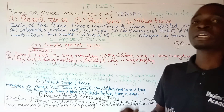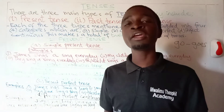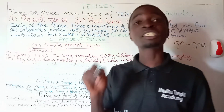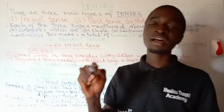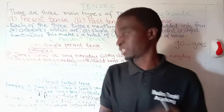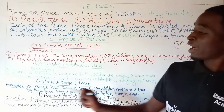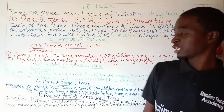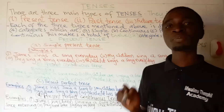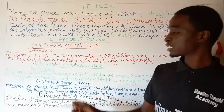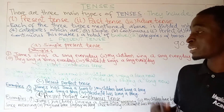The main verb should be in past participle, regardless of whether we have used have or has. Let us see our fourth category — present perfect continuous tense.